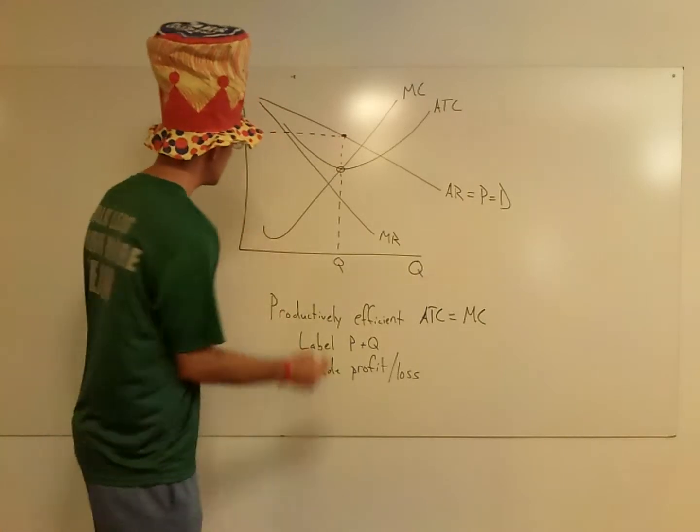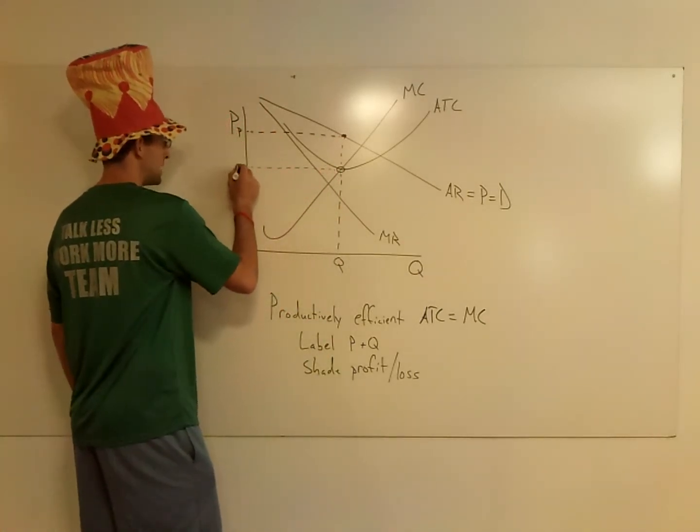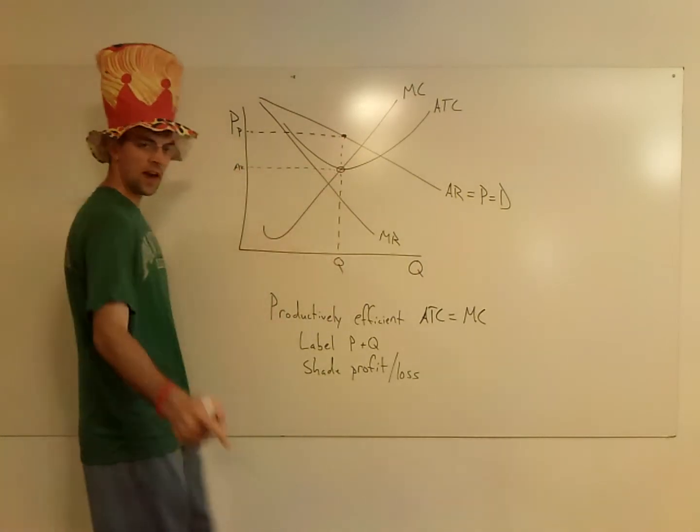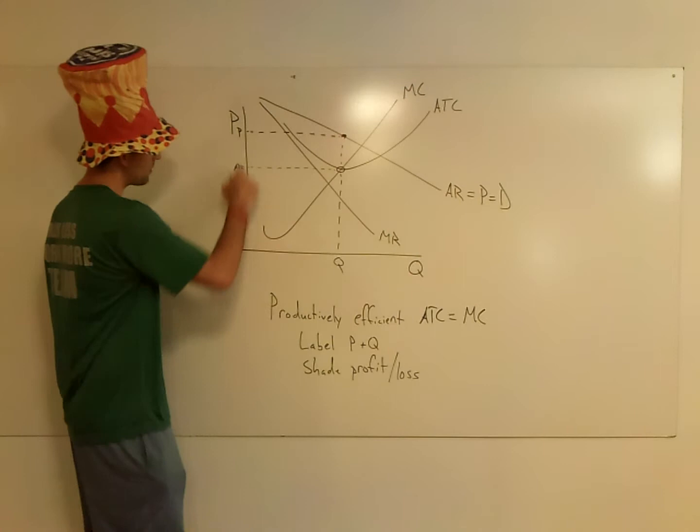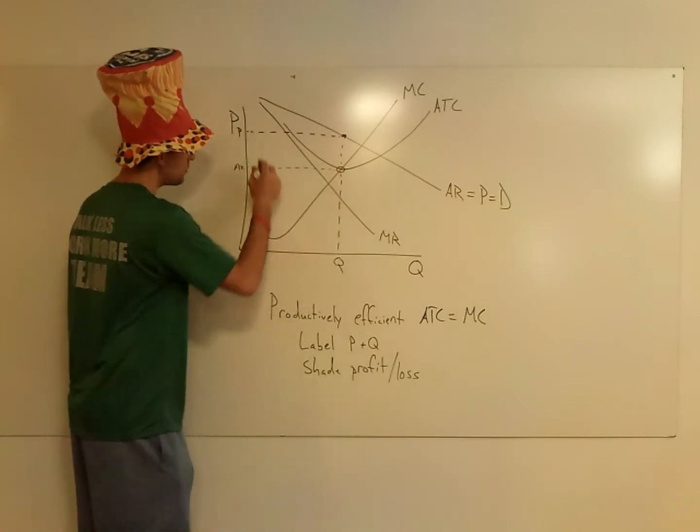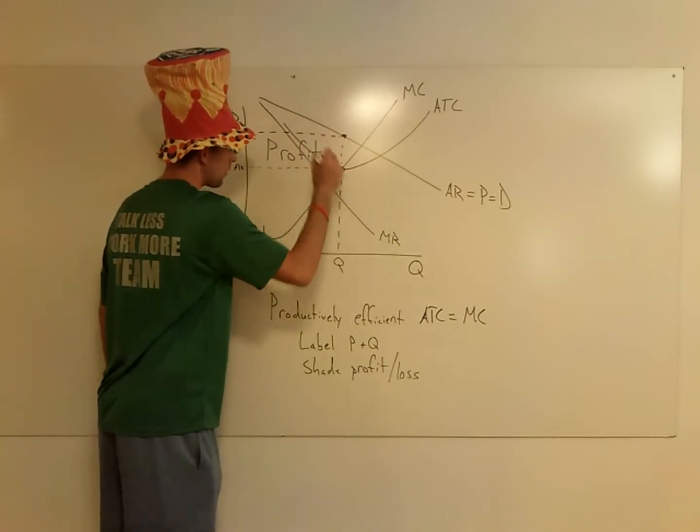So you go like so. And this is my ATC. And the thing is, when I do ATC times quantity, that gives me my total cost here. So I've got the big box as my total revenue minus my total cost, which is the smaller box on the bottom, which leaves this as my profit.